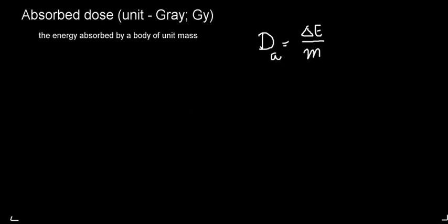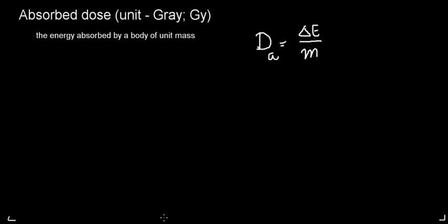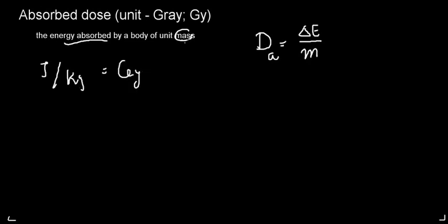The most basic concept is absorbed dose: energy absorbed per unit of mass. The unit is the gray, which is joules per kilogram. However, the problem with absorbed dose is it doesn't effectively describe the implications doses would have on human tissues.